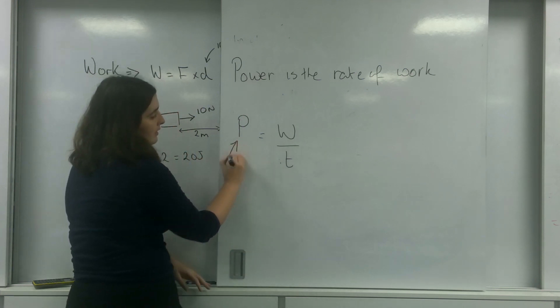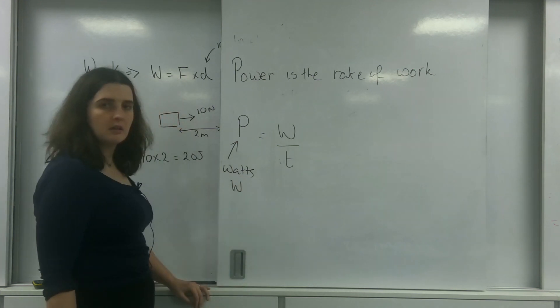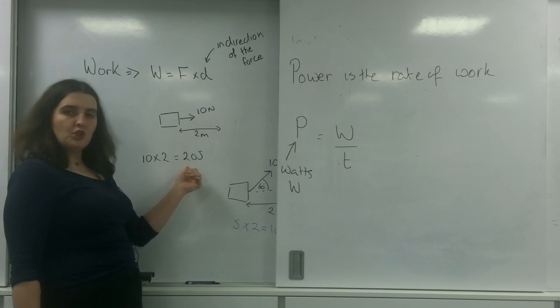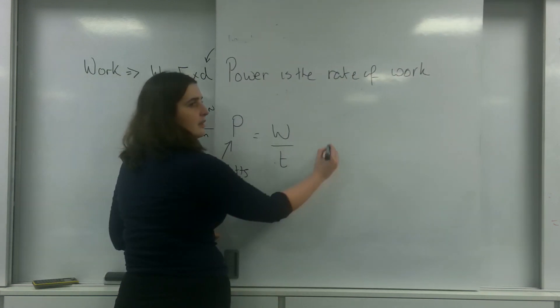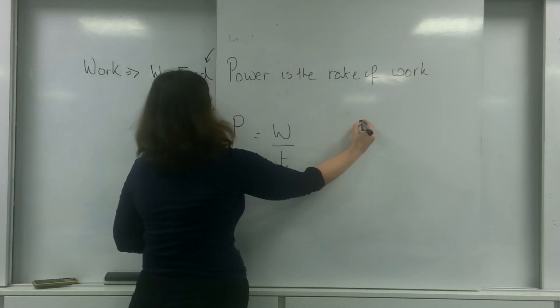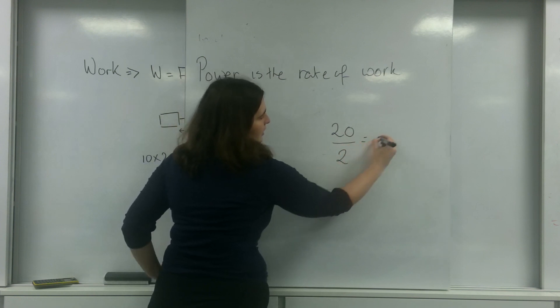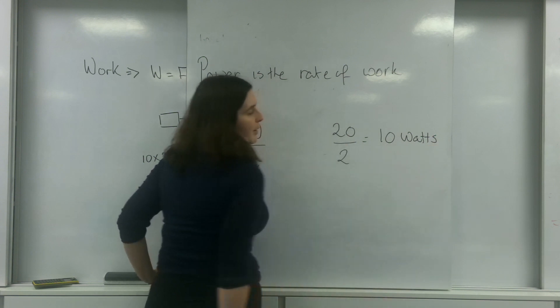Power is measured in watts, or big W. So if it takes me 2 seconds to move this object with 10 newtons for 2 meters, I would have, my work is 20 divided by 2, so that's 10 watts of power.